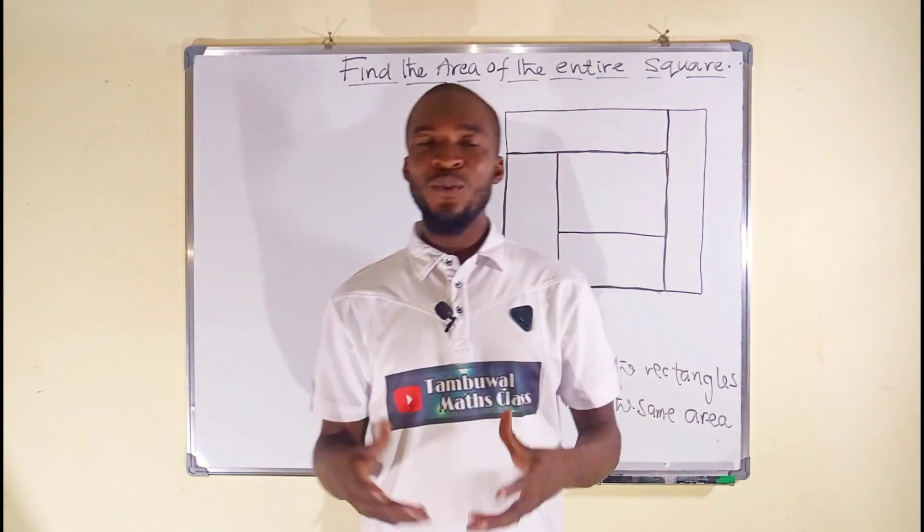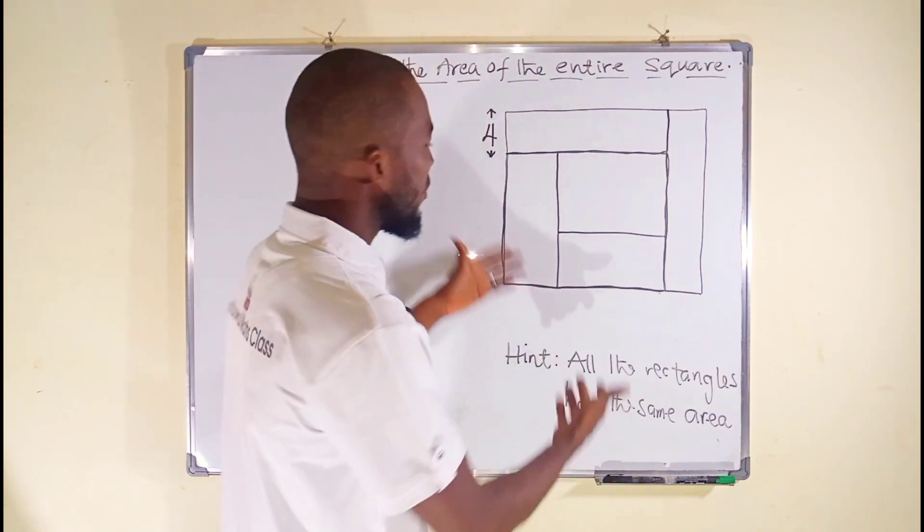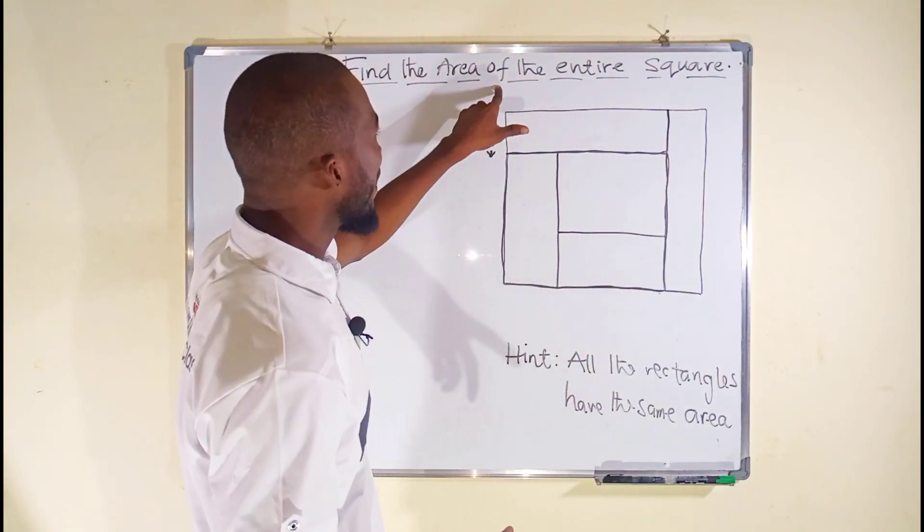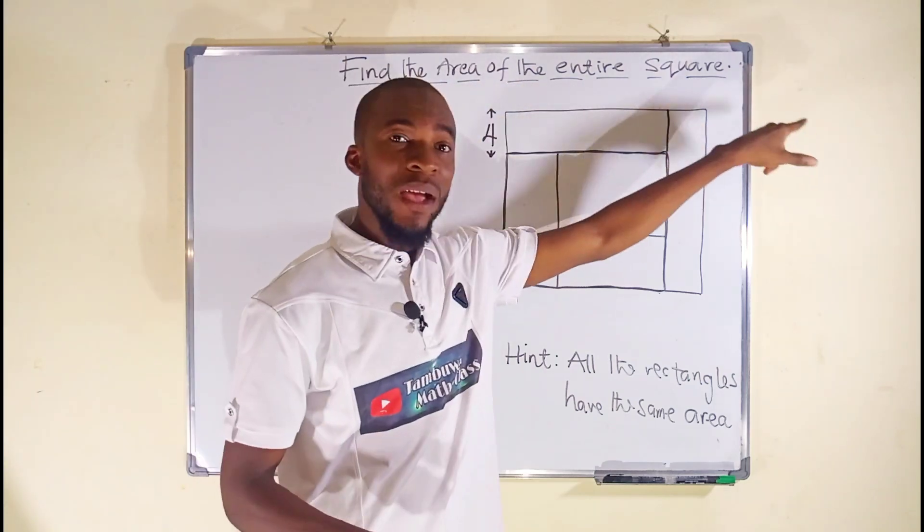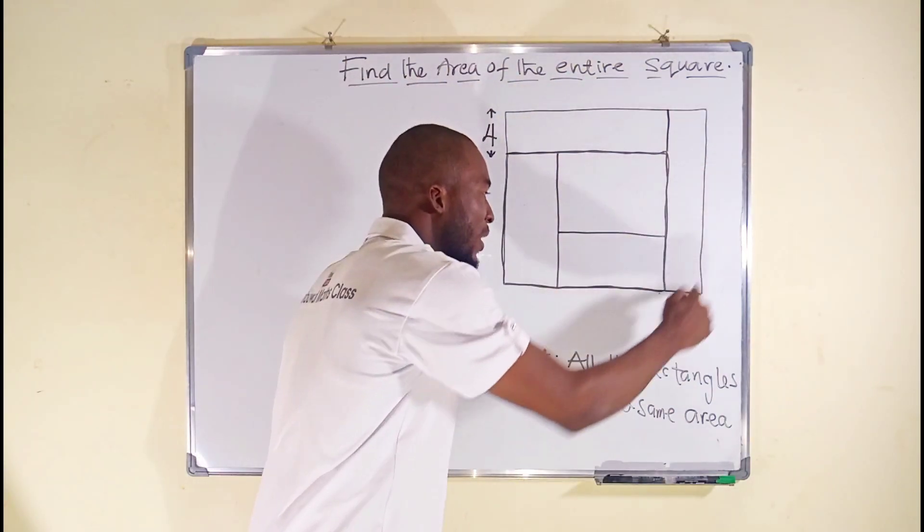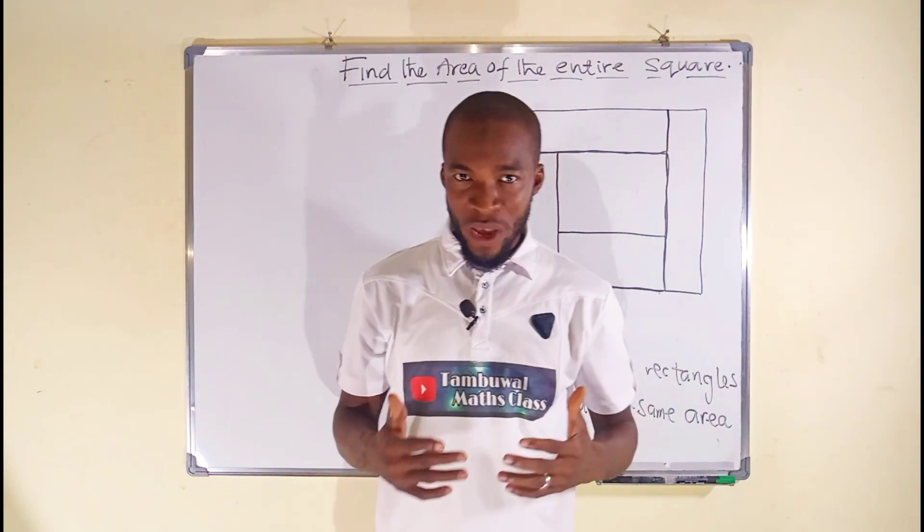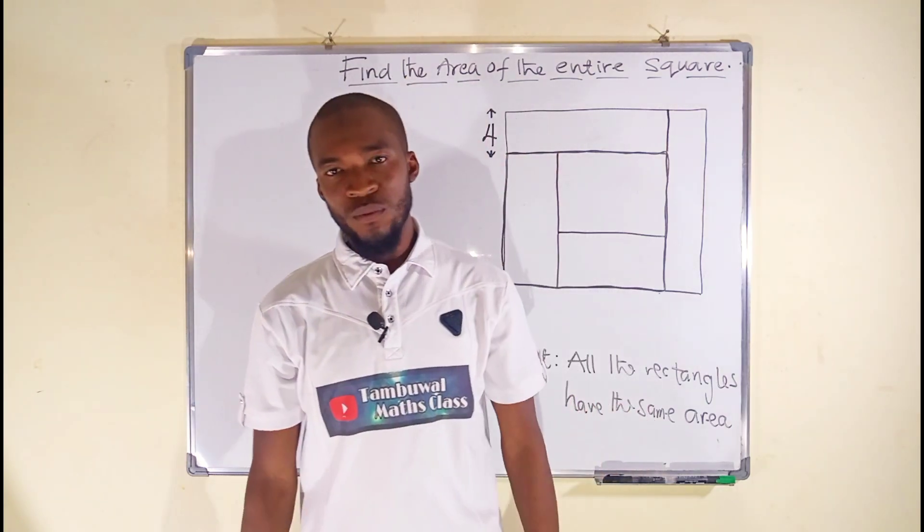Hello, good day viewers. In this tutorial, we are going to find a solution to this puzzle which says that we should find the area of the entire square. This means that this big quadrilateral is a square, and you can only find the area of a square if at least one side is given to you.